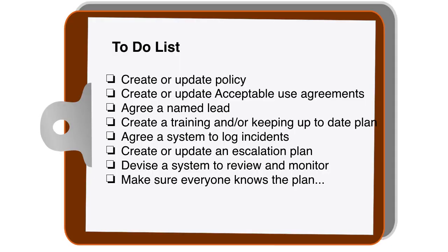Back to that to-do list — I hope some of these things have been helpful. There are policy templates you can use. Your named lead can be your safeguarding person or another person within your organisation if you want to share the responsibility. Create a training plan for that lead person and ways of keeping up to date — basically signing up for newsletters from some of the organisations I've mentioned. Agree a system to log incidents, know the escalation plan, ensure all staff know it, and then devise a system to review and monitor. Look at the log list, see if there are common issues, and check if they can be addressed through a change in the behaviour agreement. Communicate it out, make sure everyone knows — online safety policies are living, breathing things that need to adapt as technologies change and as your organisational plans around online delivery change.